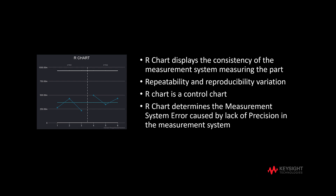Let's move on to the R chart. The R chart displays the consistency of the measurement system in measuring the part. It shows the repeatability and reproducibility variation. The R chart is also a control chart used to check if the measurement system variation is in control.